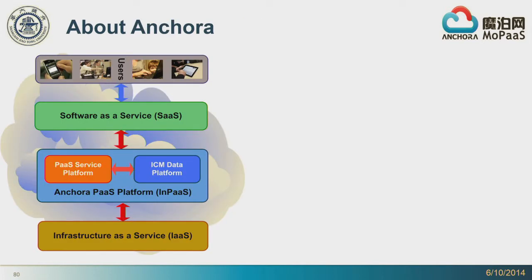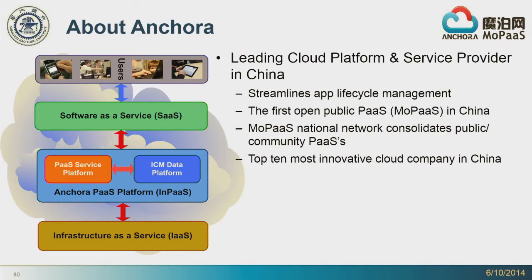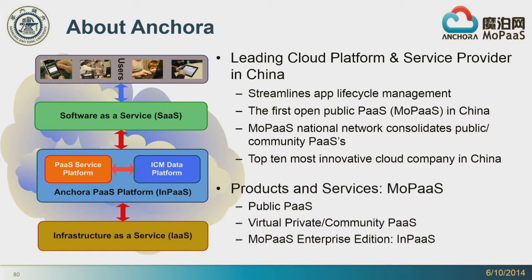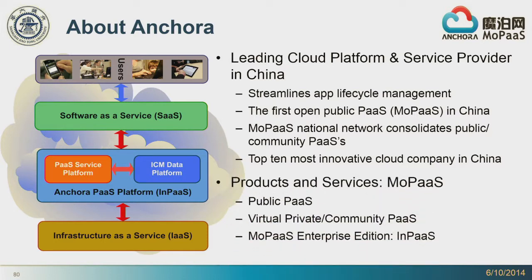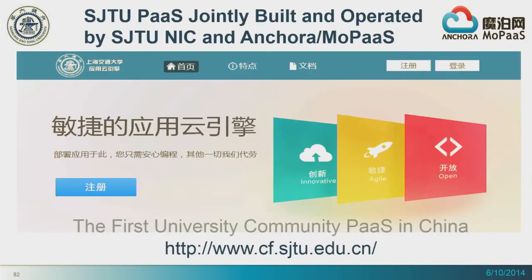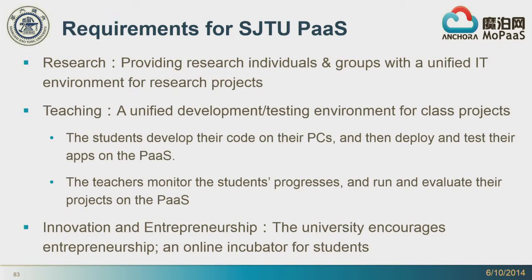About Ancora, which is my company — it's a leading cloud platform and service provider in China based on Cloud Foundry. We offer three types of products and services, in particular the public PaaS, virtual private PaaS, and also the mobile PaaS enterprise edition. Jointly, we built a university PaaS at Shanghai Jiao Tong University, which is the first university community PaaS in China.